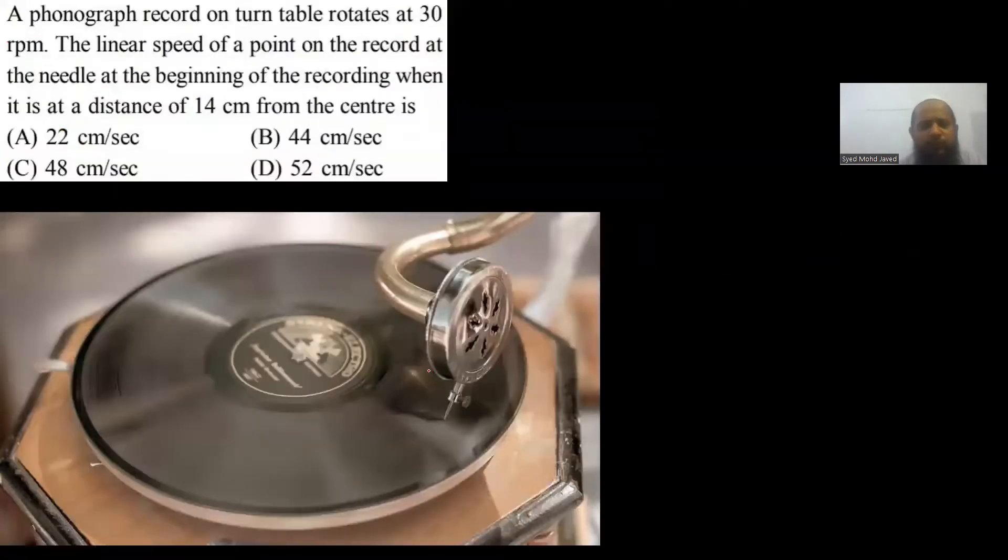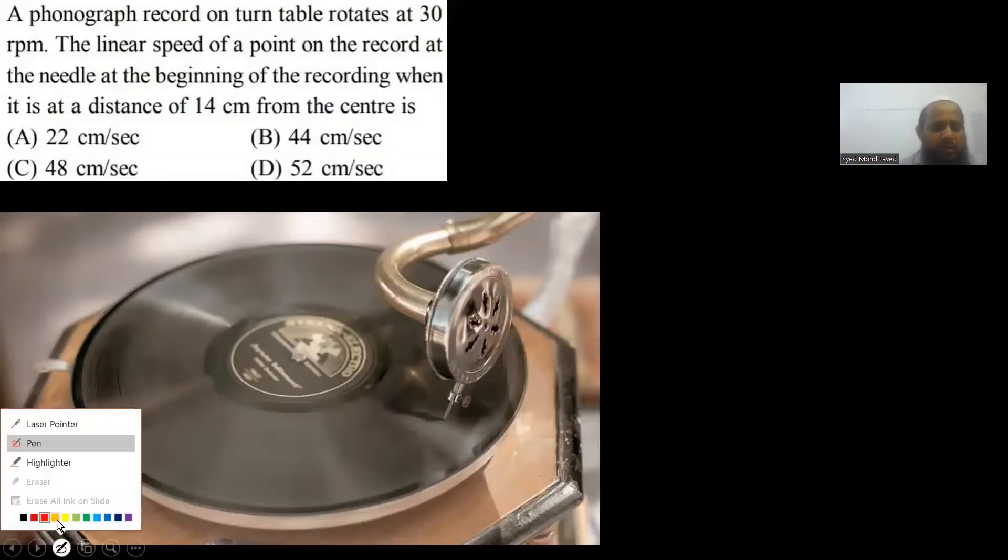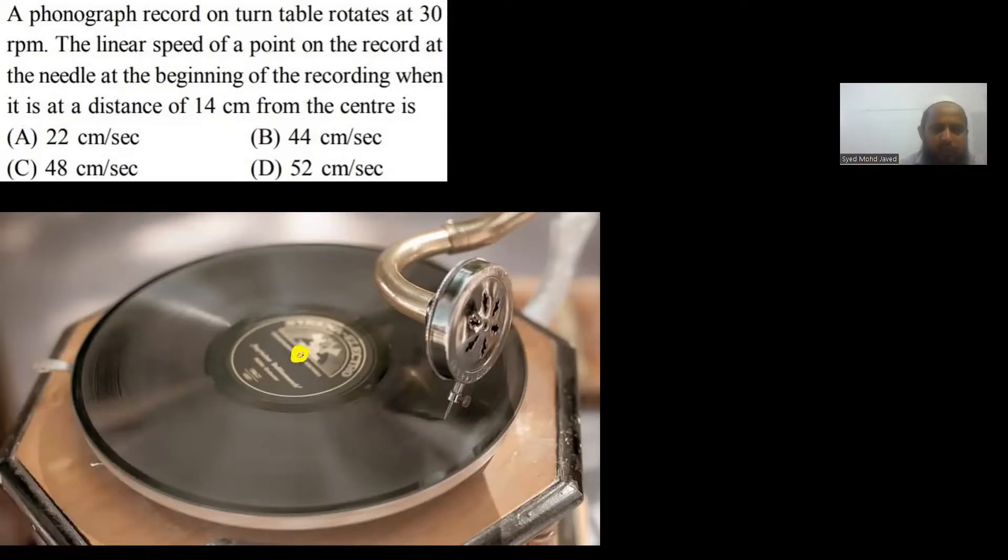I will explain the diagram. Basically, this is the center of gramophone. The middle distance is 14 cm. The disc rotates. It does 30 rotations in a minute.